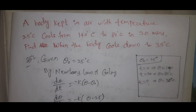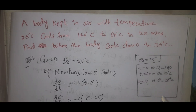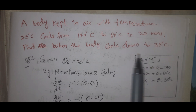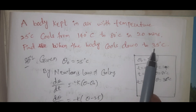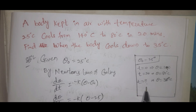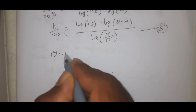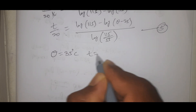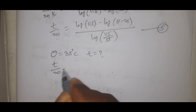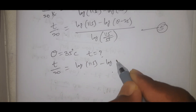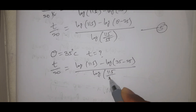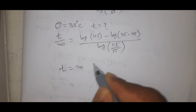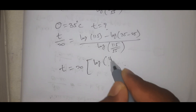Now we need to find t when theta equals 35 degrees centigrade. Substituting theta equals 35 into equation 5: t divided by 20 equals log(115 divided by (35 minus 25)) divided by log(115 by 55). So t equals 20 times log(115 by 10) divided by log(115 by 55).